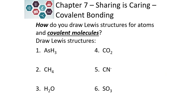Let's try a couple of examples. We start by adding up the electrons for AsH3. Arsenic is in column 5, or 15, so it has 5 valence electrons. Hydrogen is in column 1, so it has 1 electron each, but there are 3 hydrogens. This gives us a total of 8 electrons to work with.